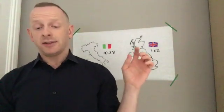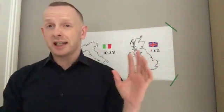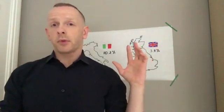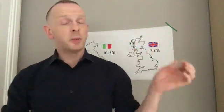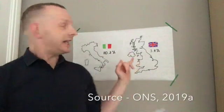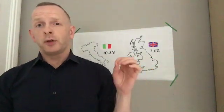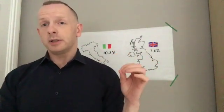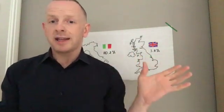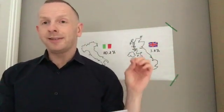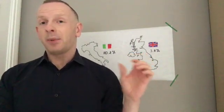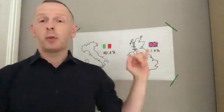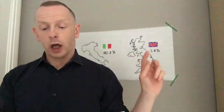Taking the UK as an example — and there's lots of information on the Office for National Statistics website worth looking at — the unemployment rate in the UK at the moment, as of 2019, is 3.8%. So only 3.8% of people of working age are unemployed. To put that into context, that's the lowest level of unemployment since December 1974, so almost 45 years since the unemployment rate has been that low.